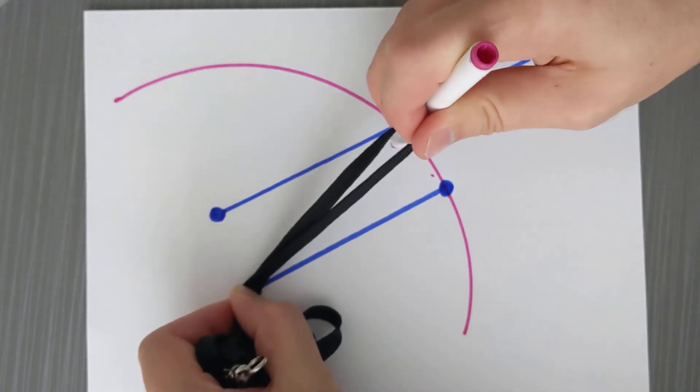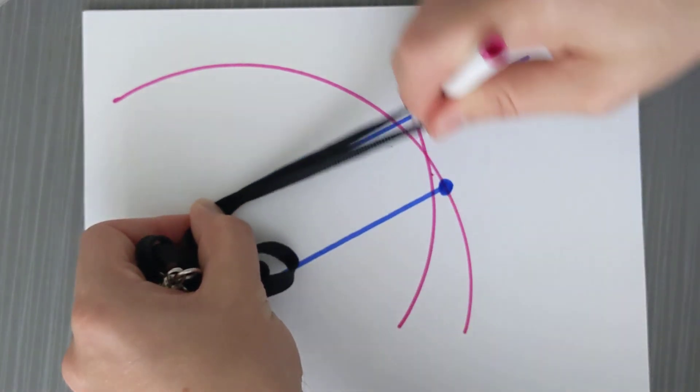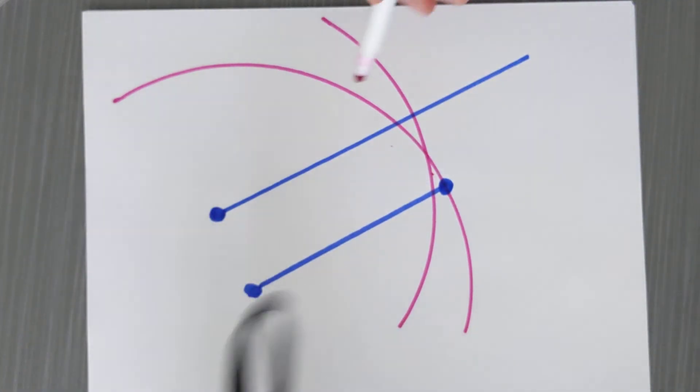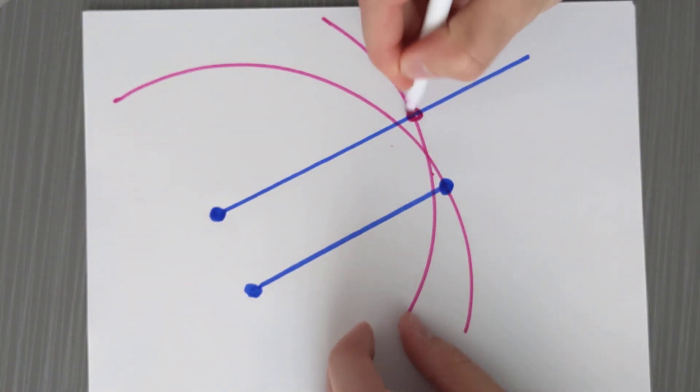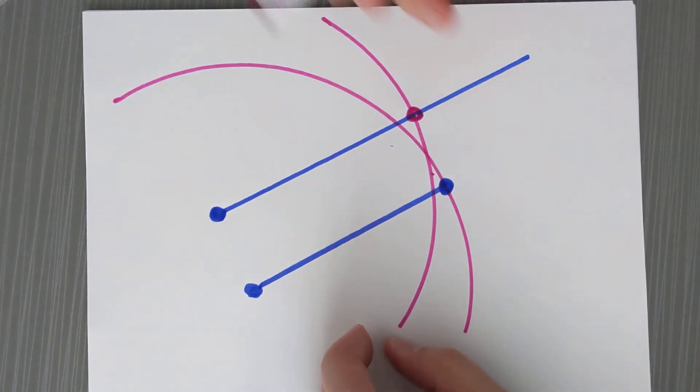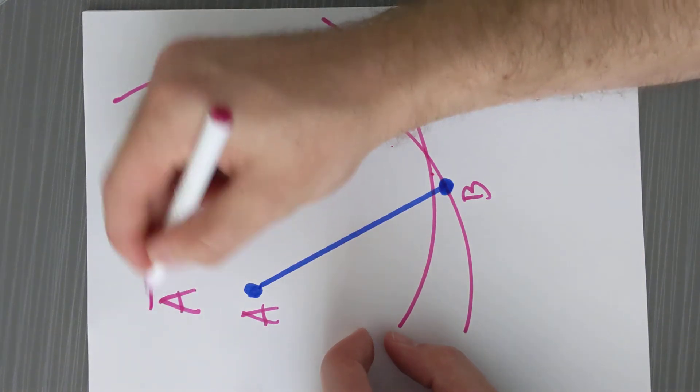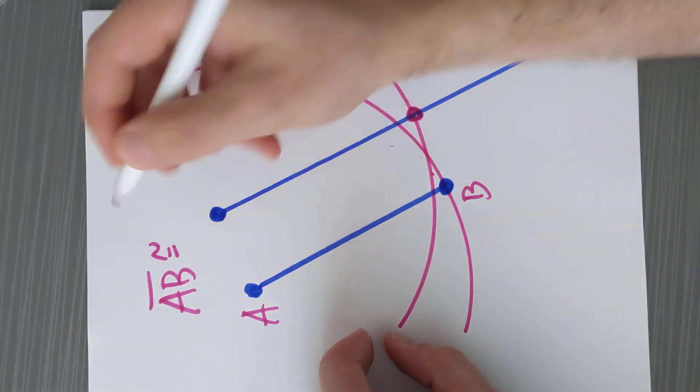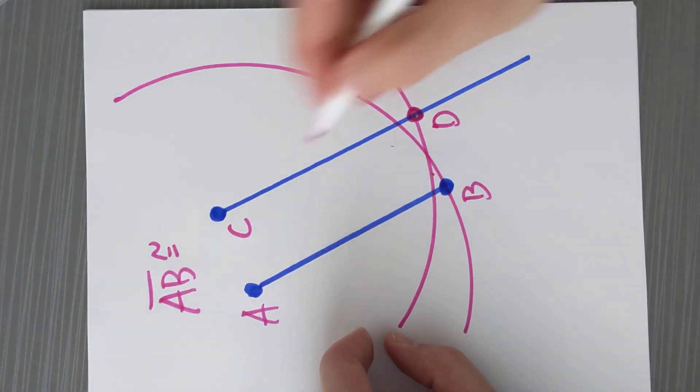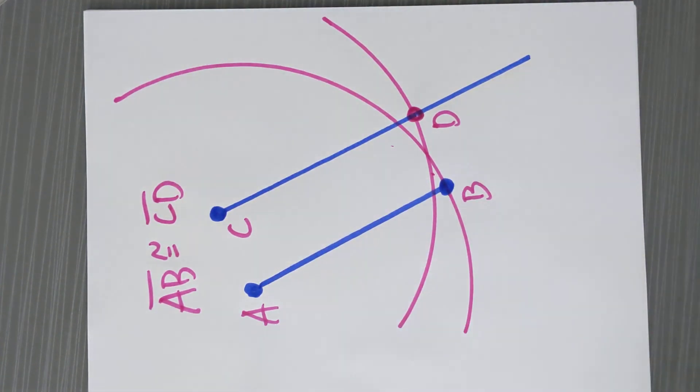Now if I drew a circle of the same size over here, then where this second circle intersects our line right here, these two distances are now the same. So segment AB is congruent to segment CD. We don't know how long they are, but we know that they're the same length.